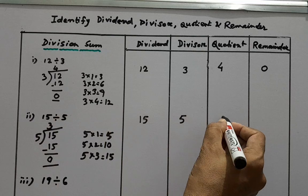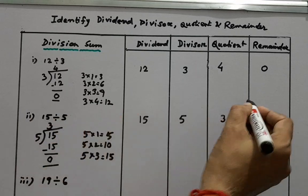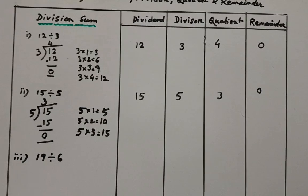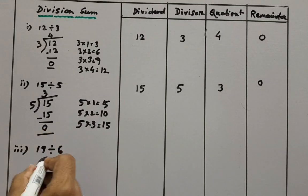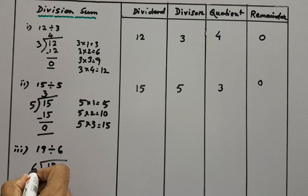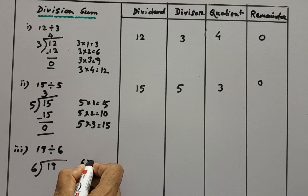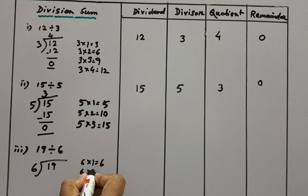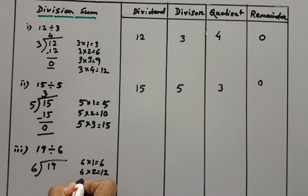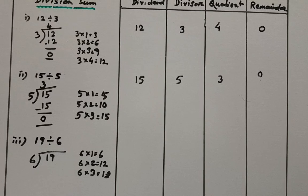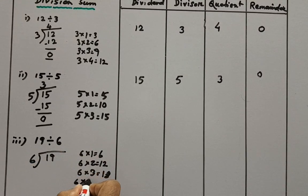Now third problem is 19 divided by 6. So we will divide 19 by 6. So we will remember the table of 6. 6 ones are 6, 6 twos are 12, 6 threes are 18. And next 6 fours are 24.